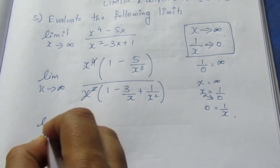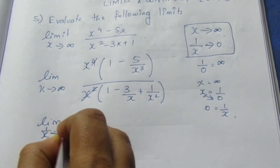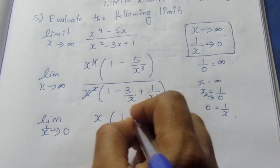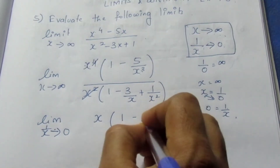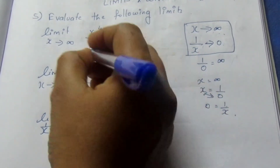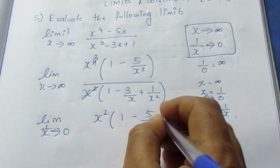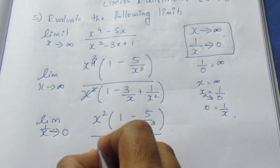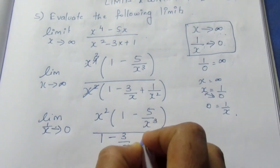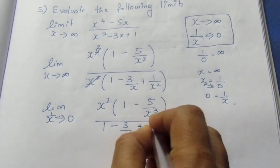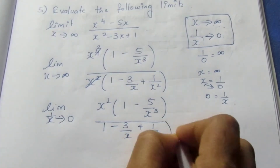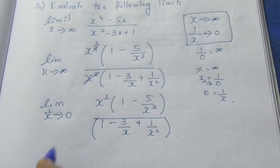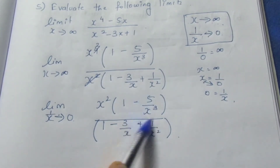Limit x tends to infinity, which means 1 by x tends to 0. We get x times the quantity 1 minus 5 by x cubed, divided by 1 minus 3x plus 1 by x squared. Since 1 by x tends to 0, we substitute accordingly.